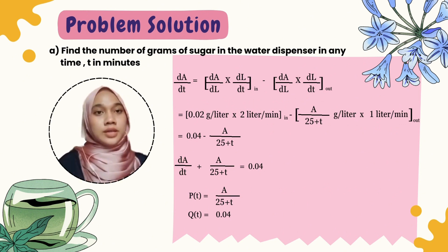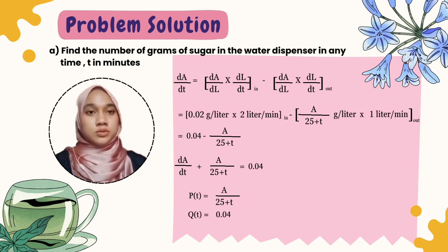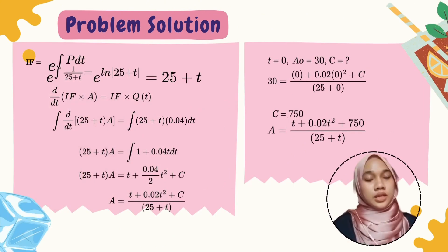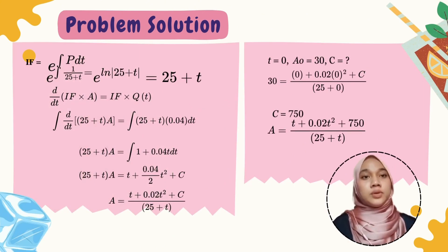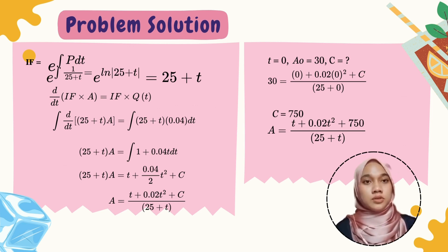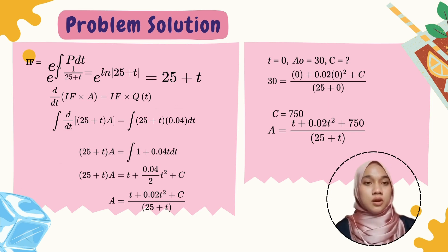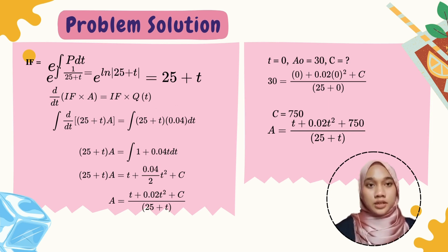We rearrange to get a linear differential equation. From this, P(t) equals 1/(25 + t) and Q(t) equals 0.04. We then find the integrating factor, IF equals e raised to the integral of P(t) dt. Substituting P(t), we get IF equals (25 + t). Multiplying throughout: d/dt [IF × A] equals IF × Q(t).